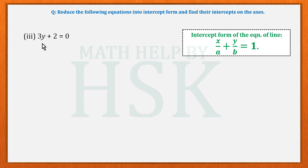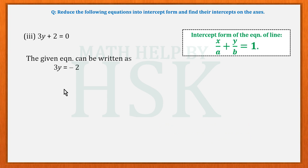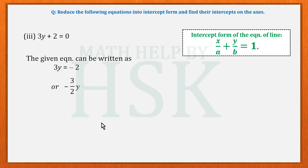For the third equation, we are given 3y + 2 = 0. To convert this into intercept form, we first write 3y = −2, then cross-multiply to obtain −3/2 · y = 1, which gives y/(−2/3) = 1.